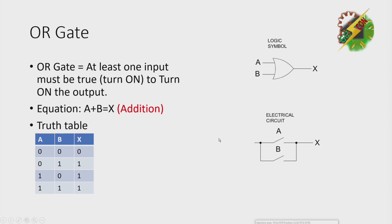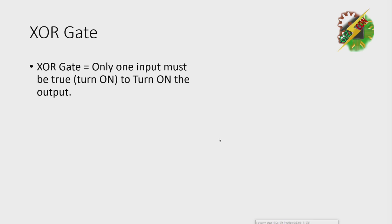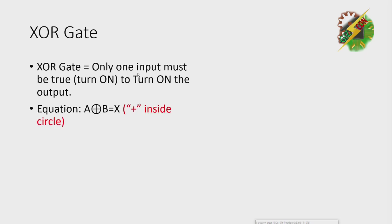Next, we have XOR or exclusive OR. What is XOR? Only 1 input must be true or turned on to turn on the output. The equation is A ⊕ B equals X — but as you can see, the plus sign must be inside a circle.